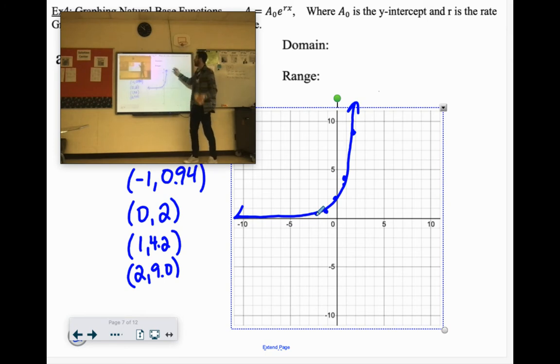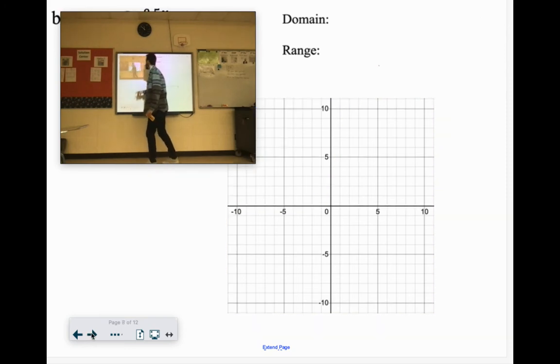So domain is always all real numbers on this. And then the range has that asymptote at 0 again. So 0 to positive infinity. Let's try one more of those.